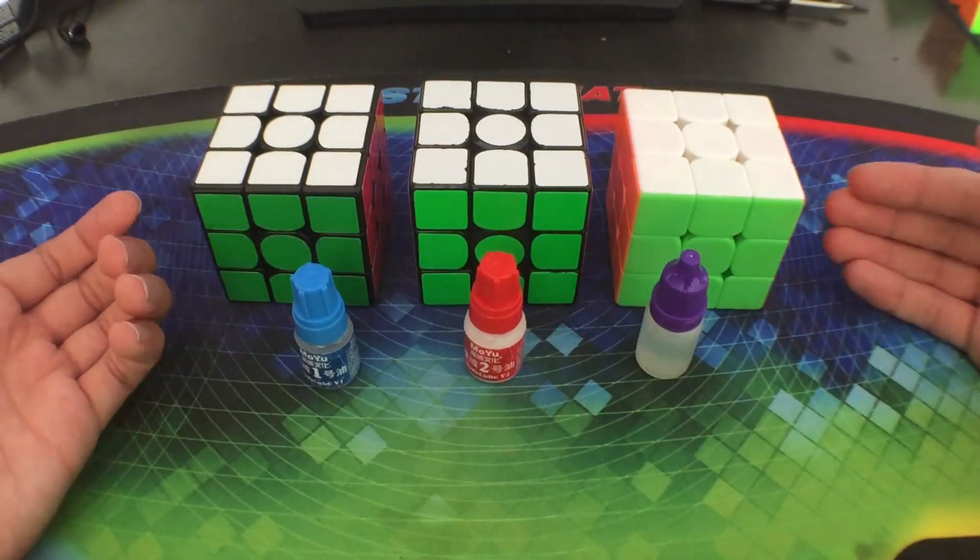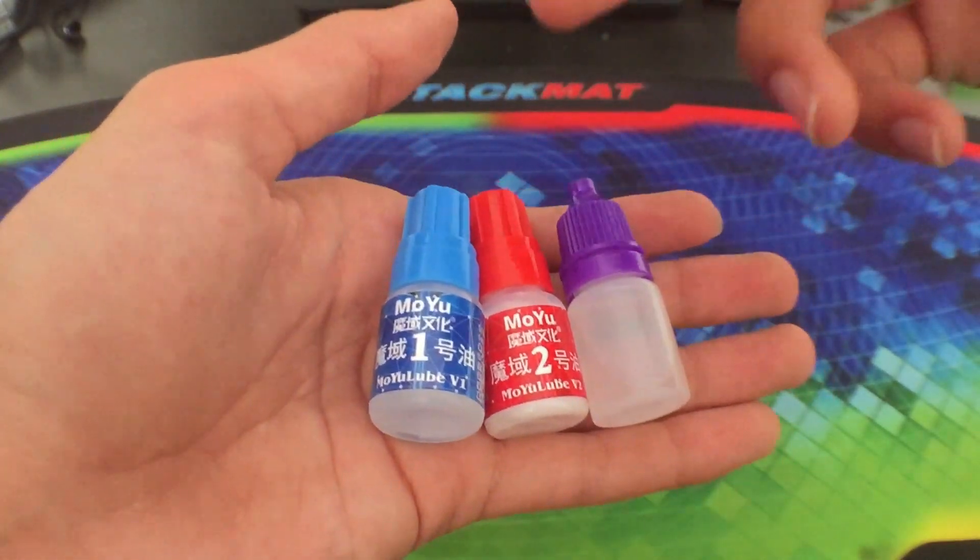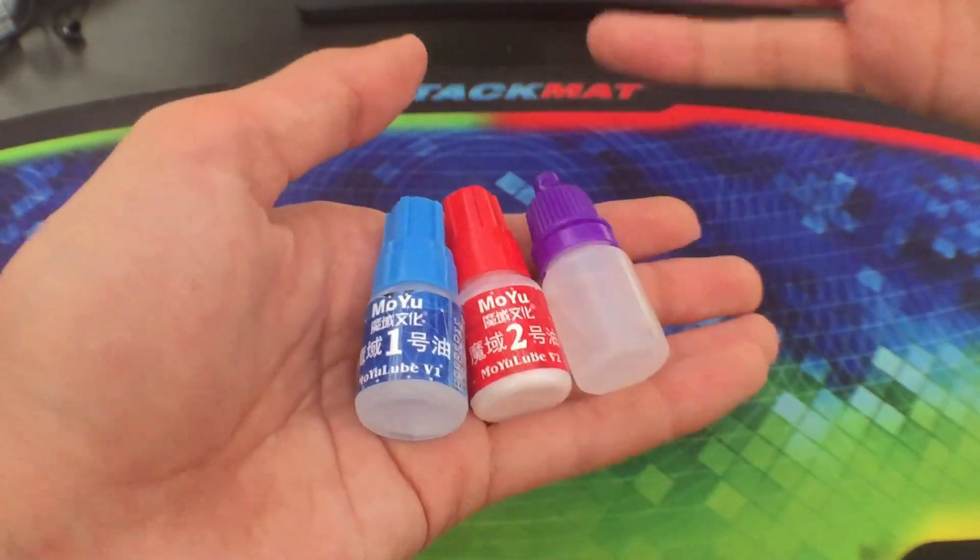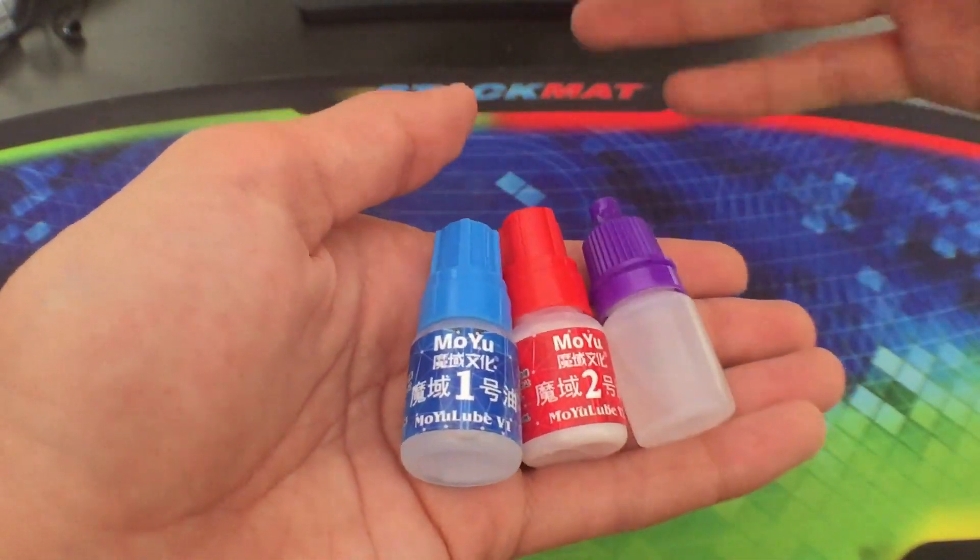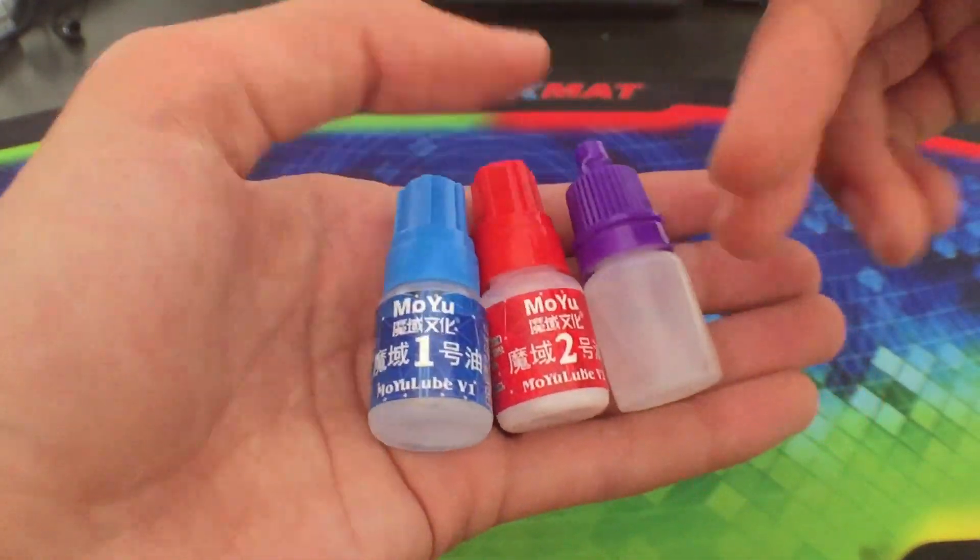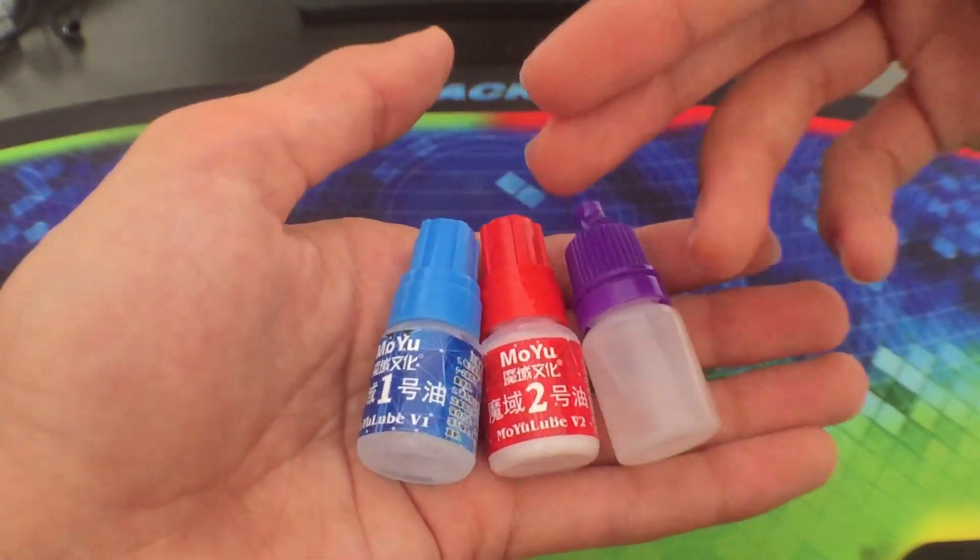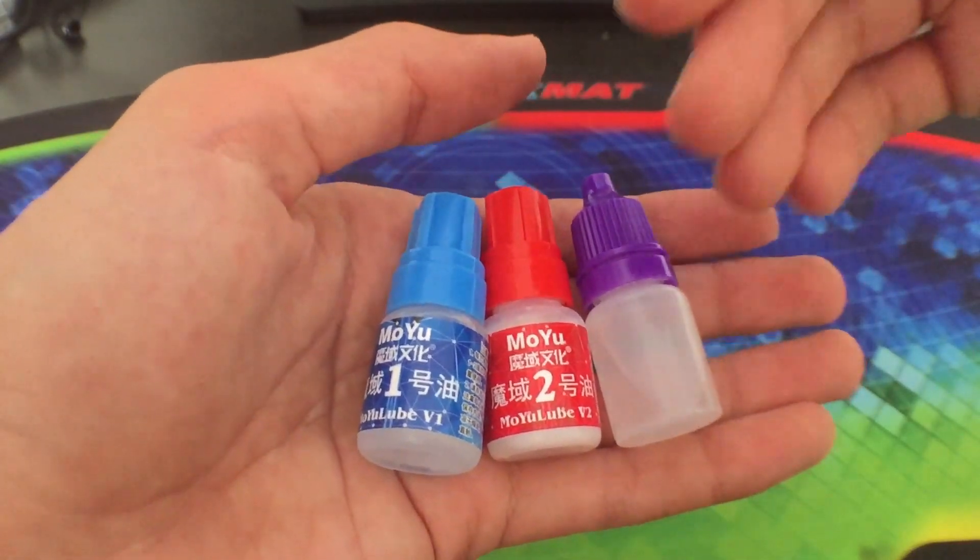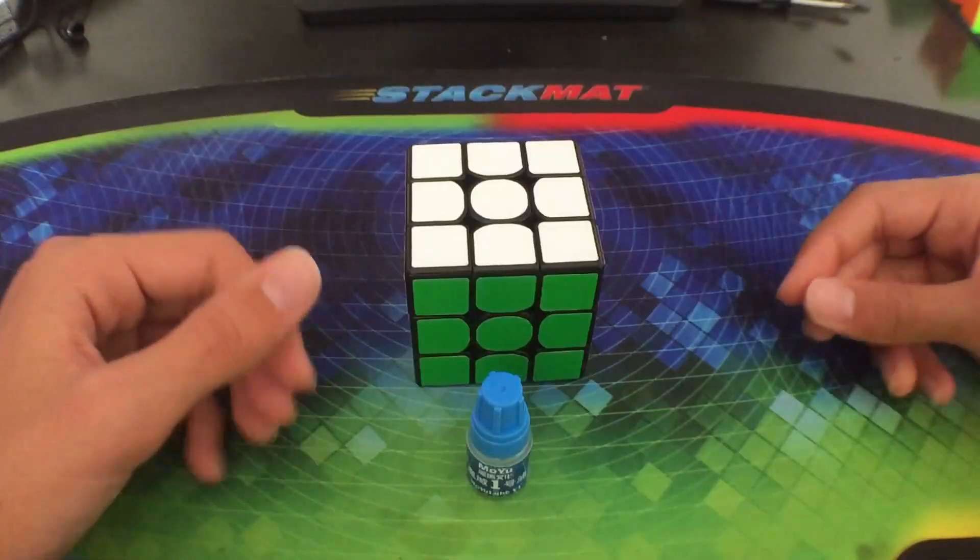So without further ado, let's give this a go. Version one is used to make the puzzle smoother or to add controllability to it. If it's a bit fast or out of control, you can use this and it'll smoothen it out. Number two is to make the puzzle faster. If it's a bit slow then this can be used to make it faster. And version three is usually for the core to sort of slow down the puzzle but also make it controllable.